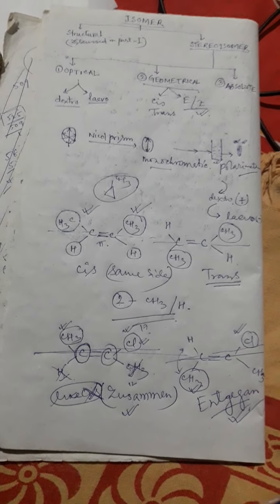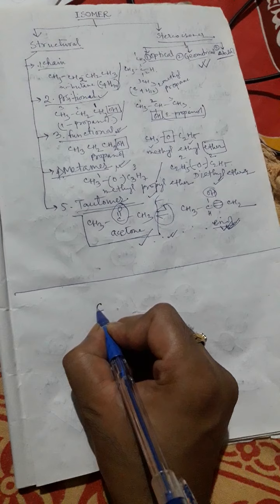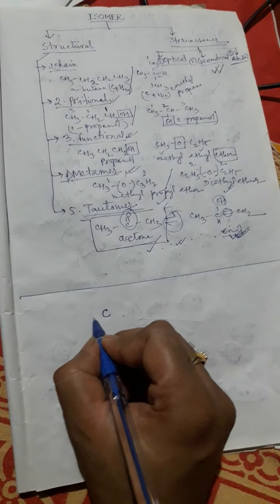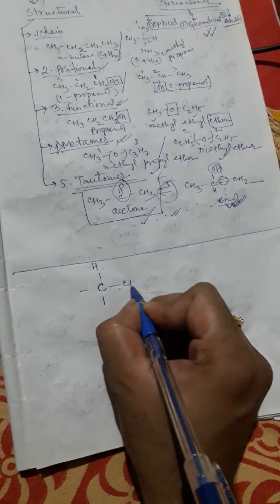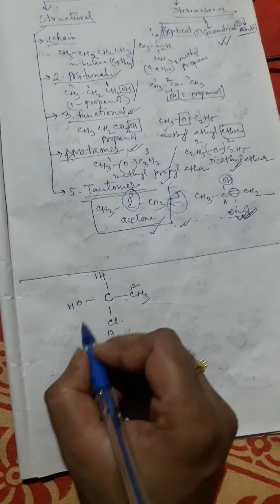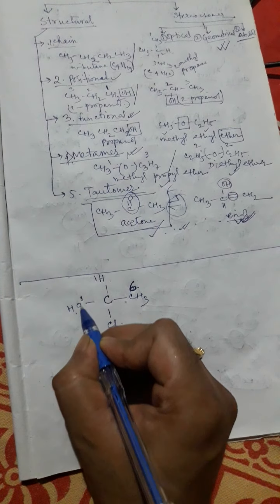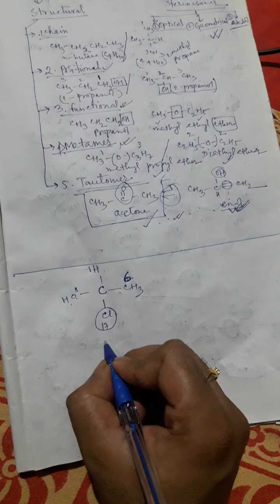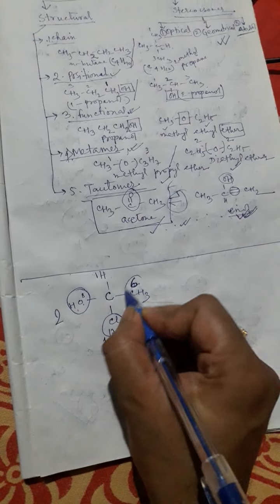Now coming to the next isomer: absolute isomerism. First, there should be a chiral carbon. A chiral carbon is a carbon which is attached with four different groups. For example, suppose we have H, CH3, Cl, and OH. Now number the groups by atomic number: Cl is 17, oxygen is 8, carbon is 6, and hydrogen is 1. The highest priority group — Cl — is numbered one, then oxygen is number two, then carbon is number three, and hydrogen is number four.